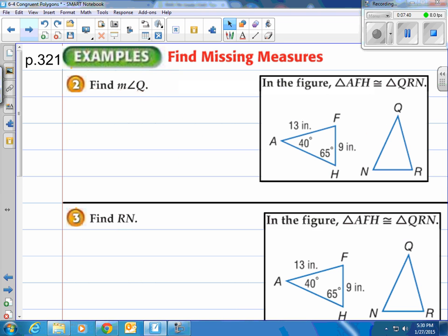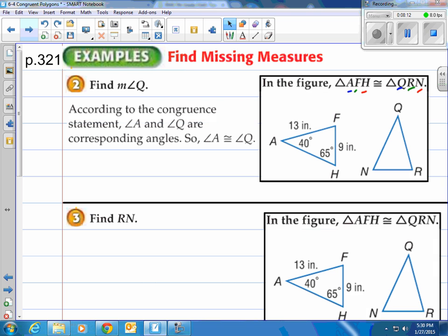Let's take a look at missing measures and how we can figure those out. It says find measure of angle Q. In our box it says in the figure, triangle AFH is congruent to triangle QRN. So we know these are congruent, and they're telling you that A matches up with Q, F matches up with R, and H matches up with N. Crucial that we know the matchup. According to the congruent statement, angle A and Q are corresponding angles, so angle A is congruent to angle Q, which also means the measures are the same. When you take a look, the measure of angle A is 40 degrees, so therefore the measure of angle Q is 40 degrees.